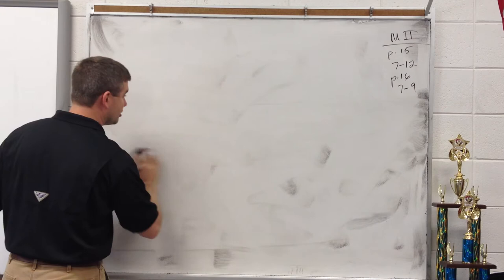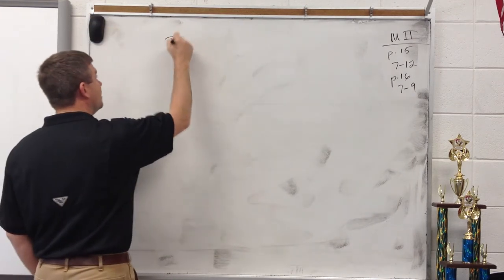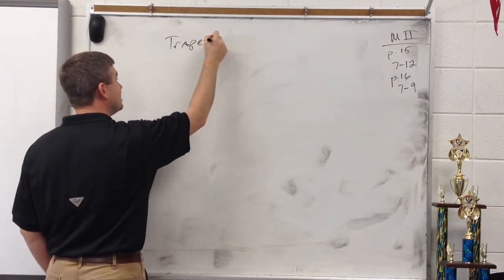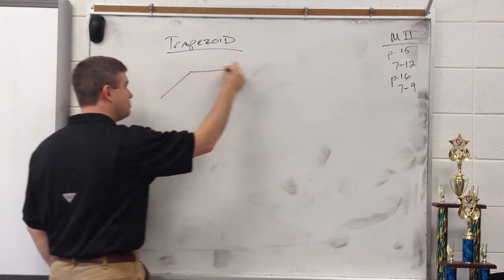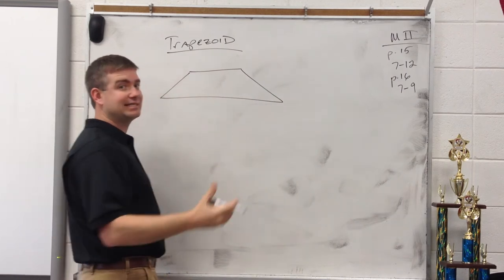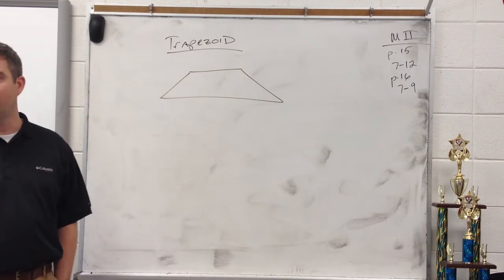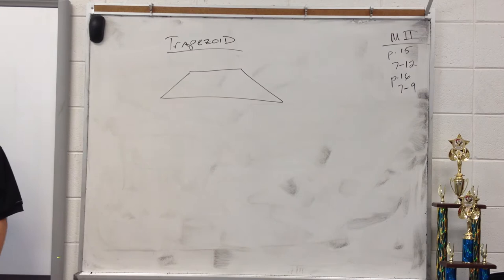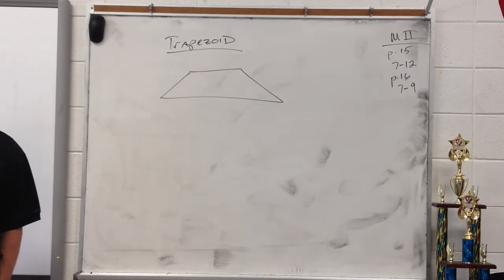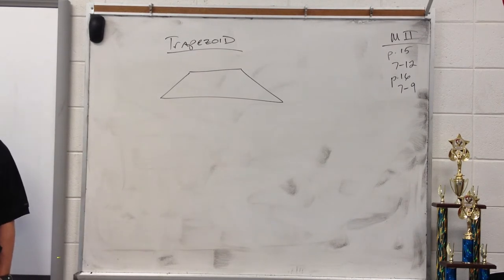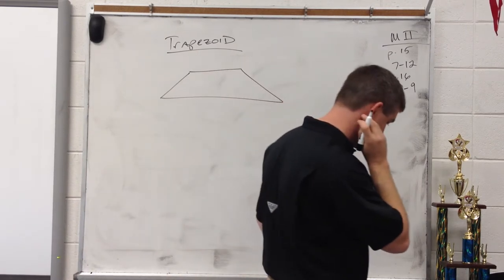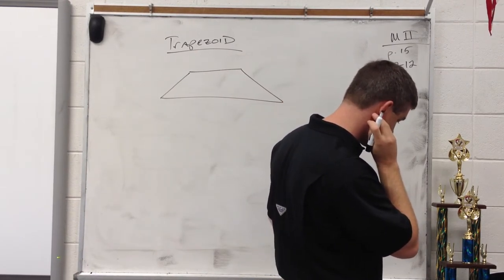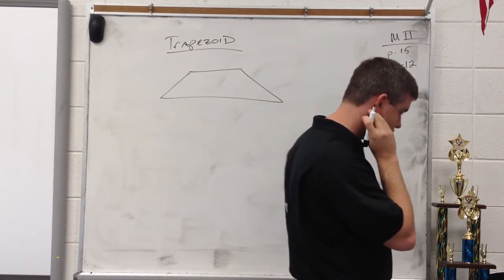Now let's talk about trapezoids — I say 'traps' for short. Most people think of a trapezoid like this; that's kind of the standard drawing of a trapezoid, though they don't all have to look like that. A trapezoid is a quadrilateral with exactly one pair of parallel sides.